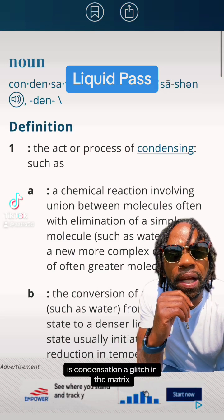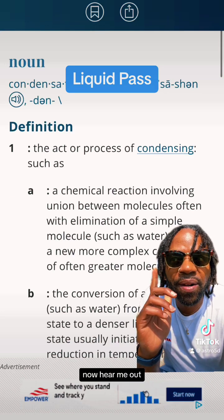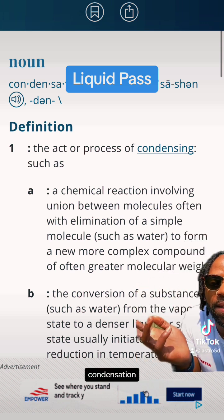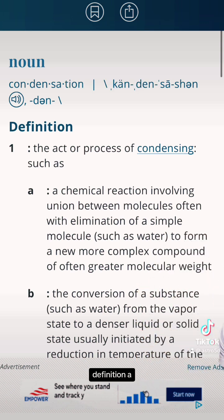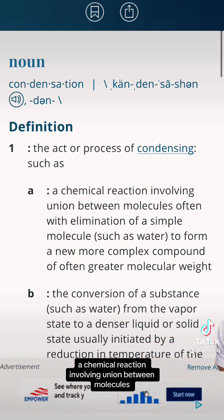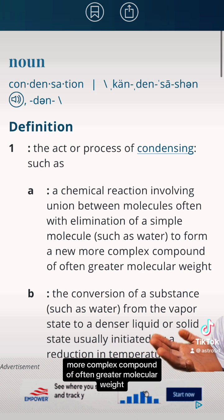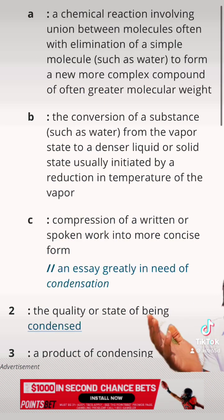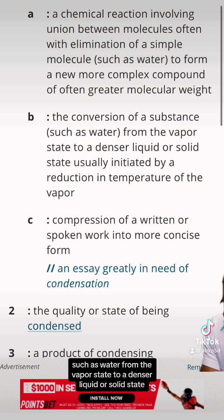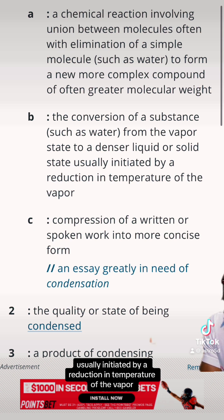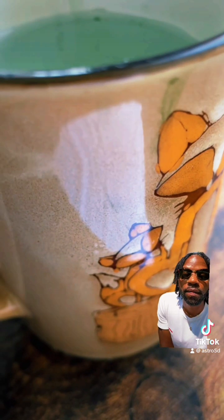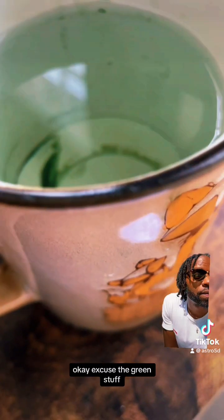Is condensation a glitch in the matrix? Now hear me out. Condensation definition: a chemical reaction involving union between molecules, often with the elimination of a simple molecule such as water, to form a new more complex compound of often greater molecular weight — or the conversion of a substance such as water from the vapor state to a denser liquid or solid state, usually initiated by a reduction in temperature of the vapor.